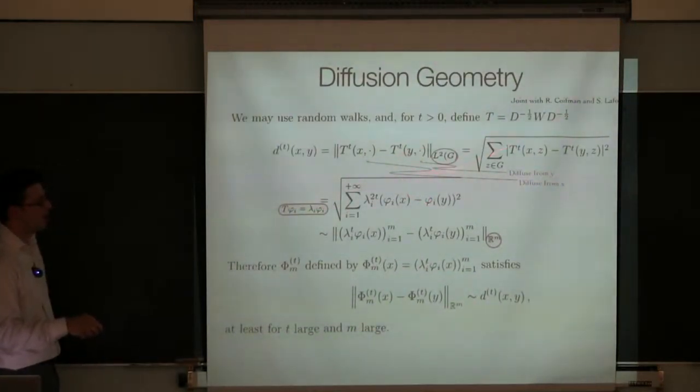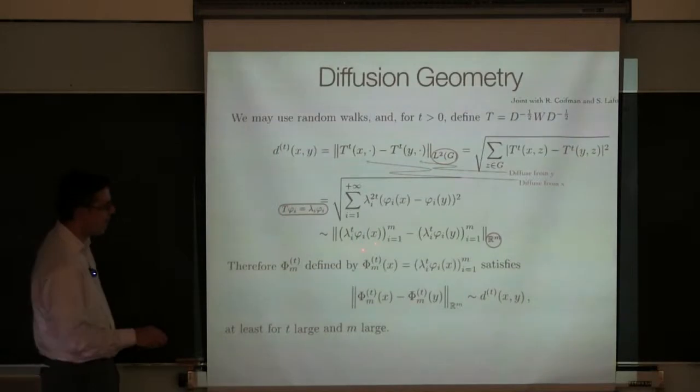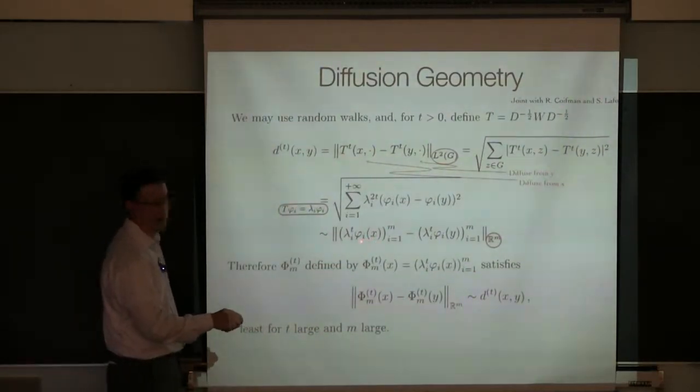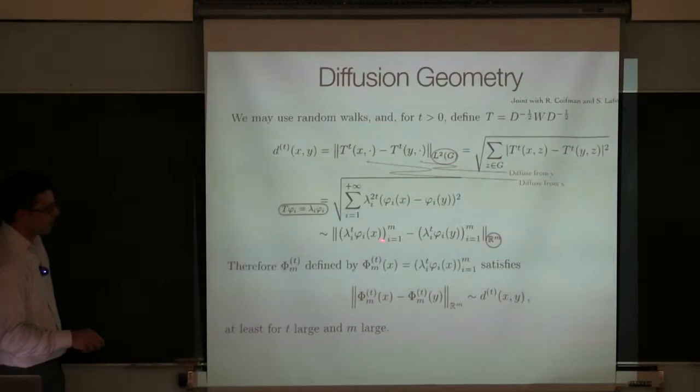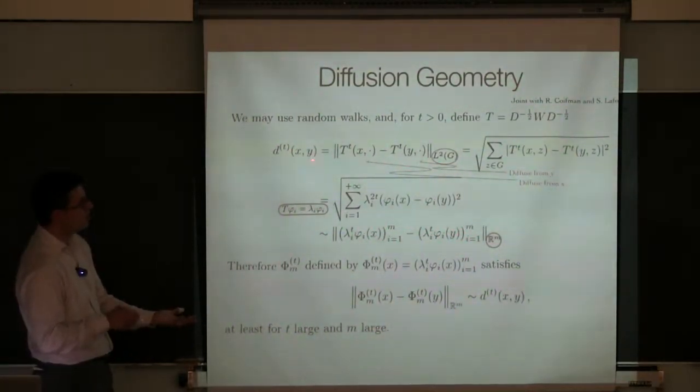Well, after you do some simple algebra in the basis of eigenvectors of the random walk, you see that this distance is comparable to the Euclidean distance between these two vectors. The vector whose coordinates are the eigenvectors evaluated at x, rescaled by the corresponding eigenvalues. But these are exactly the coordinates we assign to the points according to the map that we had before. So Euclidean distance in the image of this diffusion map is comparable to diffusion distance on the original one.